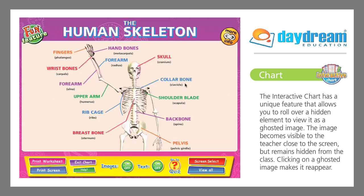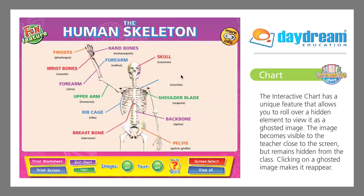The interactive chart has a unique feature that allows you to roll over a hidden element to view it as a ghosted image. The image becomes visible to the teacher close to the screen, but remains hidden from the class. Clicking on a ghosted image makes it reappear.